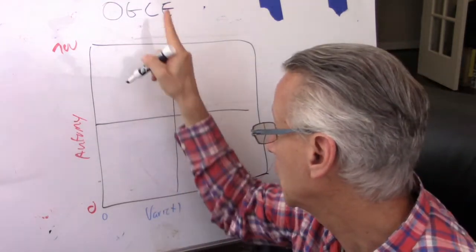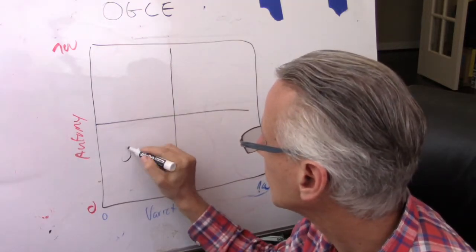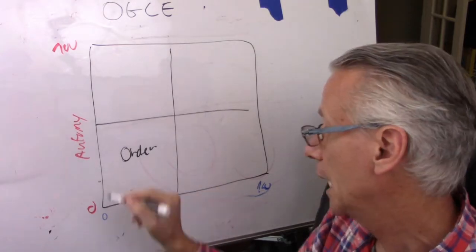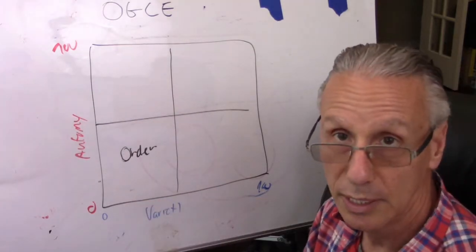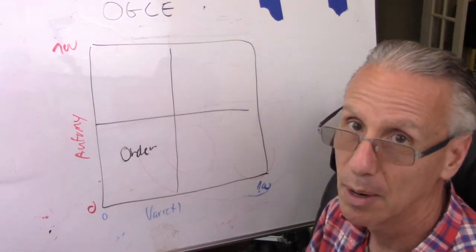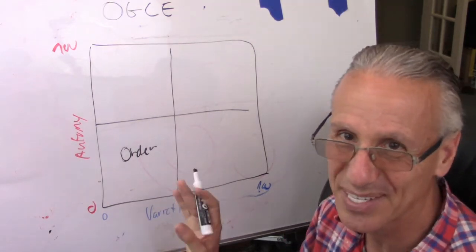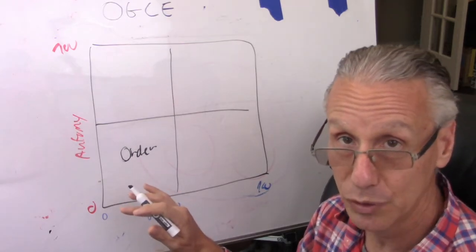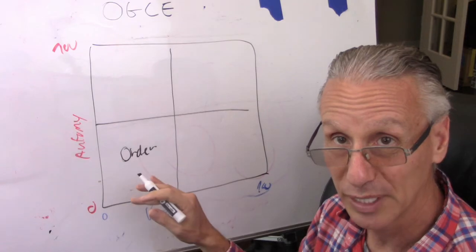So, I'll start with O, which is order. And order is a state where you have low variety and you have low autonomy, and everything is very predictable, or much more predictable than other stages. This stage is equilibrium.